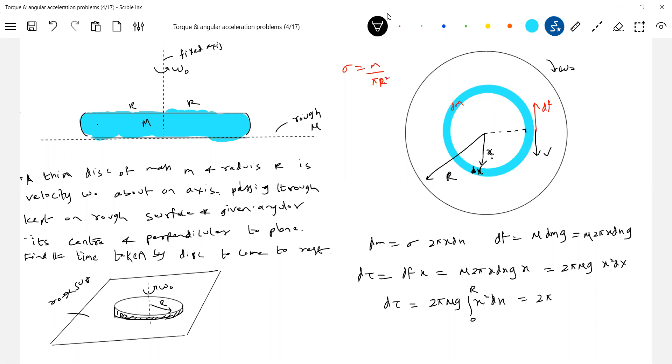So 2 pi, this should be tau naught. So tau naught should be equal to 2 pi mu sigma g r cubed by 3. This is a net torque acting.